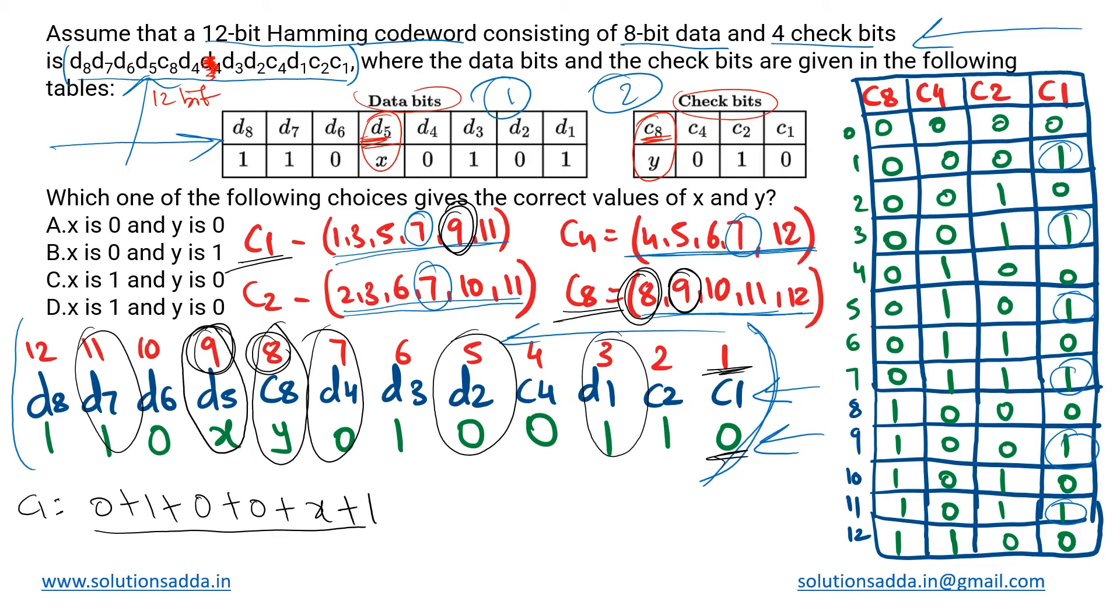For these we will be doing the modulo 2 addition. The result we are getting is x plus 2, and when we do the modulo 2 addition this will simply convert to x. Now because this position has to satisfy even parity because of c1, the result should always be 0. Then only even parity will be satisfied. The result we are getting is x, which means the value of x itself has to be 0.